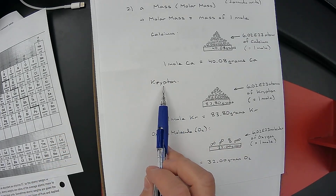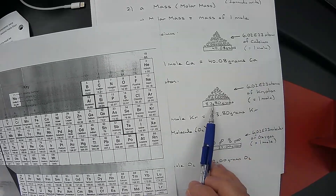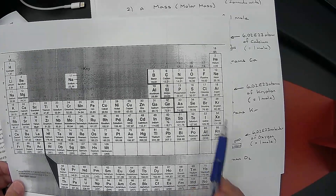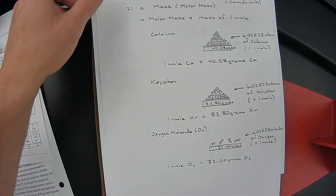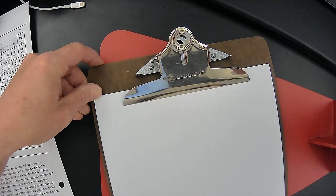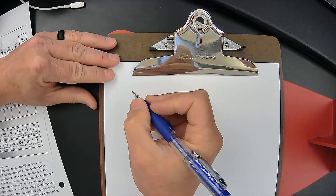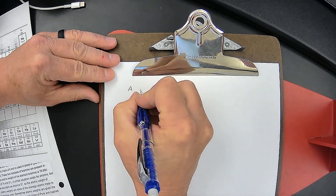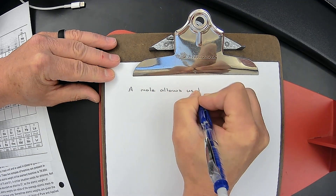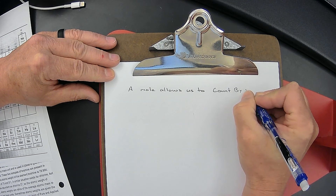When we put krypton on the balance and get a mole of krypton — 602 billion trillion atoms of krypton — the balance reads 83.80 grams. This gets us to the key idea: a mole allows us to count by weighing.